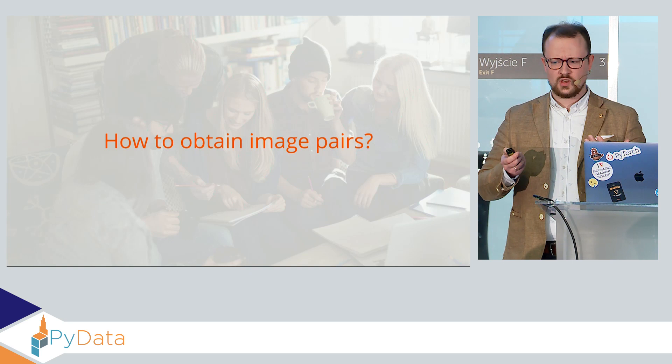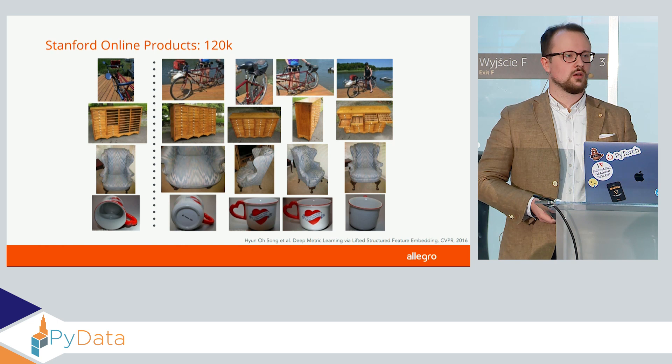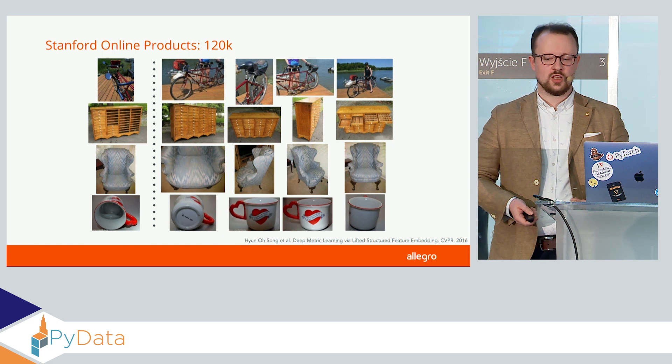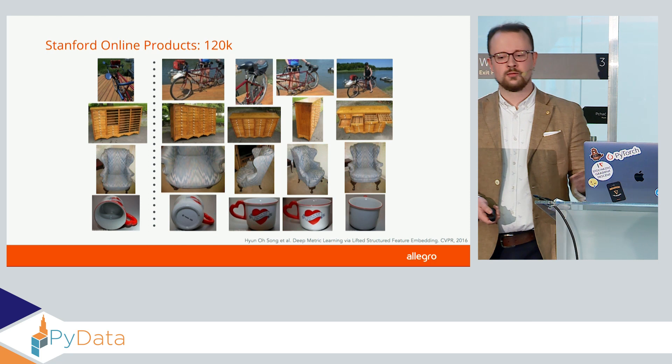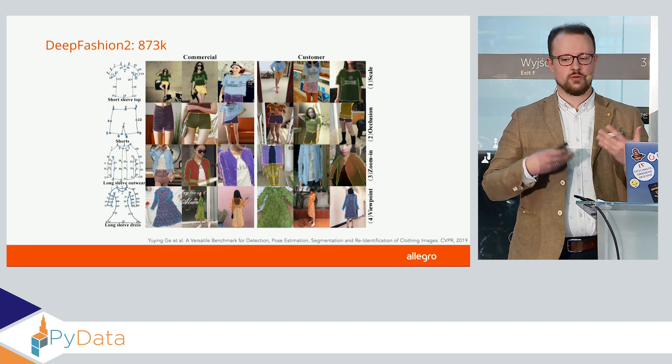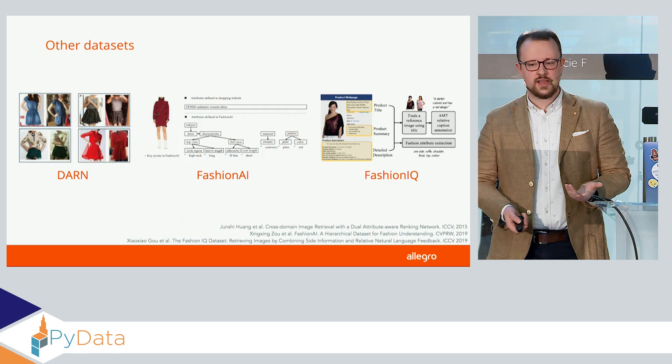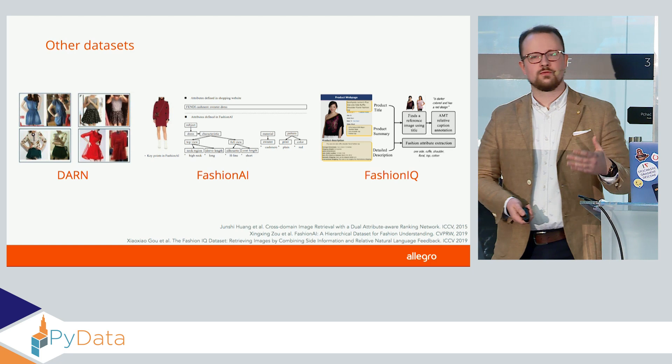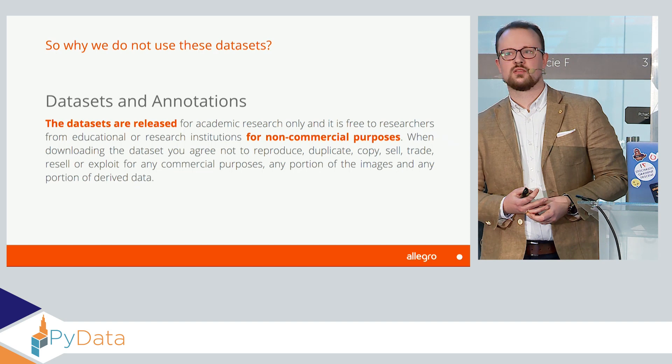When it comes to positives, it's much harder. We could turn to external datasets — for example, Stanford Online Products, with over 120,000 image pairs scraped from eBay. Unfortunately, there are no fashion images. There are also some better datasets, for example DeepFashion, where we have exactly what we're looking for: nearly one million image pairs of clothing. Then there are some smaller datasets like DARN or Fashion AI. Unfortunately, they all have just one thing in common — they are for non-commercial purposes. So we cannot use them.